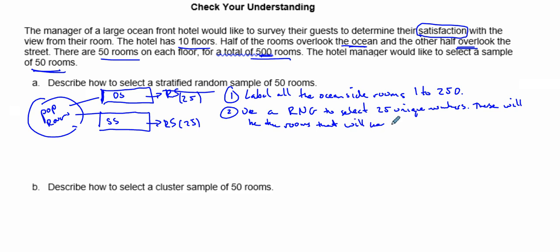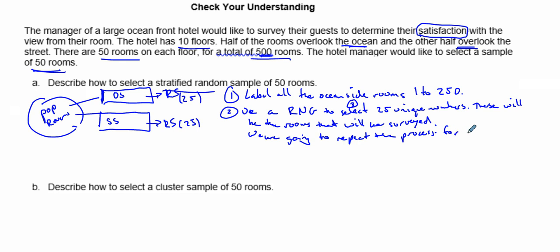We use the random number generator to select 25 unique numbers from the ocean side — that's the selection step. Then we repeat the same process for the street side rooms. So we have our labeling step, our randomized selection, and then a repeat of that process for the street side rooms, giving us our full sample of 50 for the survey.